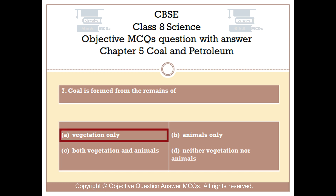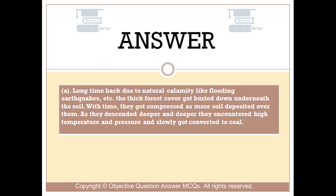The right answer is Option A. Long time back, due to natural calamities like flooding and earthquakes, the thick forest cover got buried down underneath the soil. With time, they got compressed as more soil deposited over them. As they descended deeper and deeper, they encountered high temperature and pressure, and slowly got converted to coal.